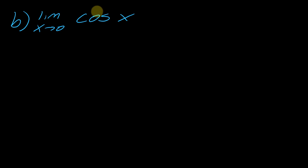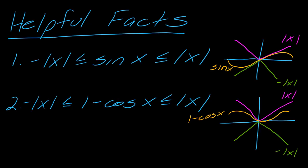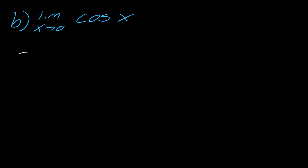Now, if I want to use the squeeze theorem here to prove this limit, so the limit as x approaches 0 of cosine of x. So just notice that my helpful fact is actually for 1 minus cosine of x. So this is actually the way that I'm going to approach this. So I'm going to have that the negative absolute value of x is less than or equal to 1 minus cosine of x is less than or equal to the absolute value of x. So I'm going to start here.